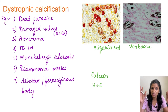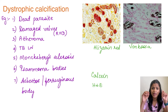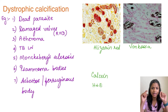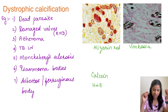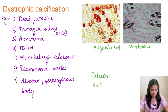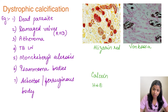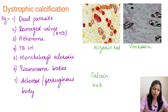Grossly, whenever we see calcium it will be chalky white kind of deposits and it will be gritty to touch — that is how grossly calcium deposits are seen. A tuberculosis lymph node which can be converted into a stone is also an example of dystrophic calcification.